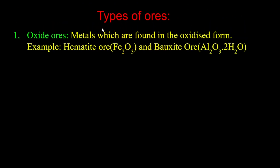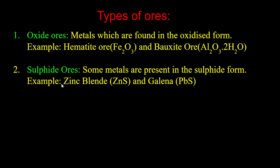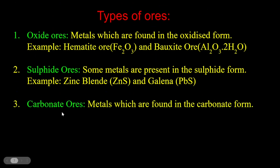Next, types of ores. The first type is oxide ores — metals which are found in oxidized form. Examples include hematite (Fe2O3) and alumina (Al2O3). The second type is sulfide ores. Examples include zinc blende (ZnS) and galena (PbS).